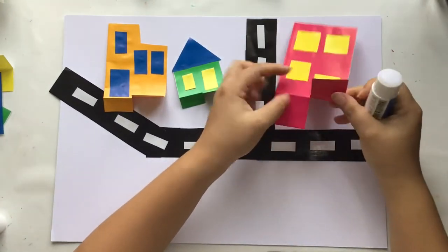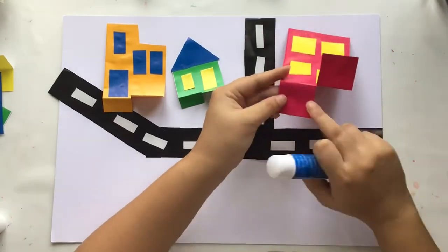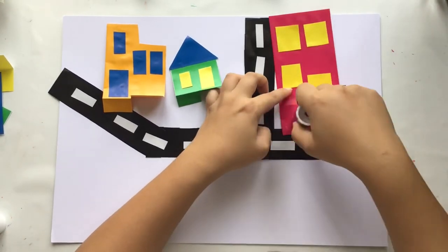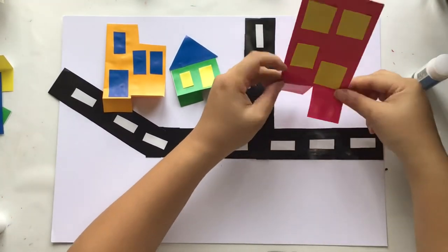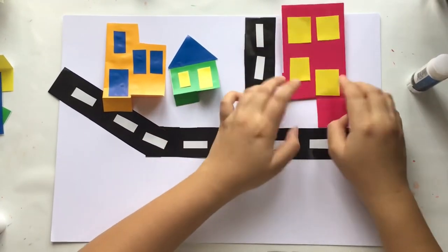After creating two or three buildings, now it's time to attach and paste them on the background paper near the streets. Glue the bottom part of your buildings and make sure they are attached well on the paper.